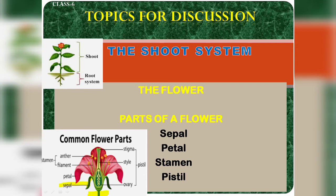Petal is the second whorl of the flower. The petal protects the inner whorl. Petals are collectively known as corolla. They are usually bright and colored and often scented.